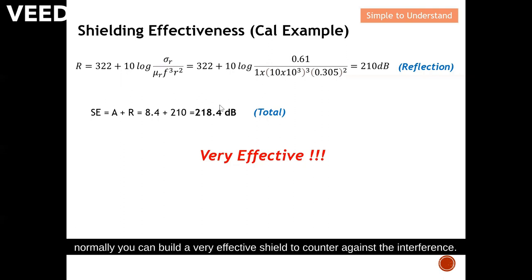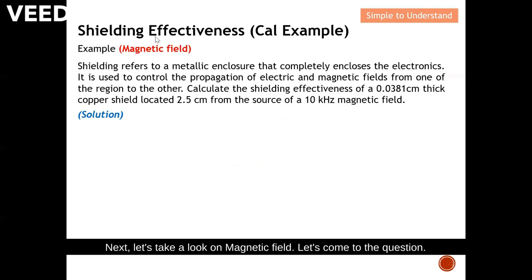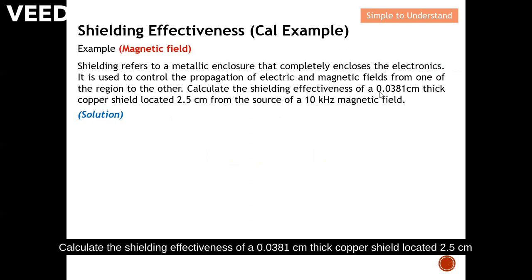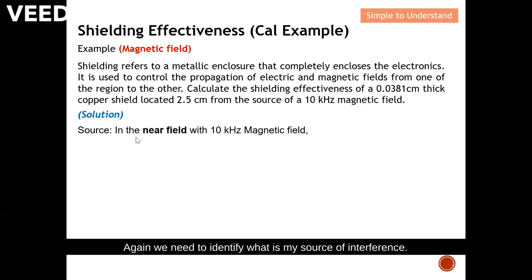Next, let's look at the magnetic field example. The question: calculate the shielding effectiveness of a 0.0381 centimeter thick copper shield located 2.5 centimeters from the source of a 10 kilohertz magnetic field. We identify this as near field with a 10 kilohertz magnetic field source.